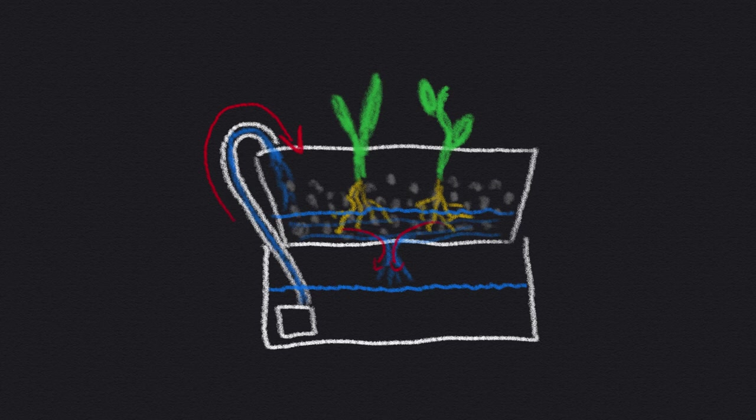The planter is filled with a growing medium such as stones to keep the plants in place. The growing medium shouldn't absorb too much water as we want most of it to drain regularly so that the plant roots get some air.